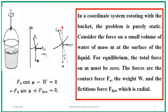F₀ makes an angle φ with the vertical. The component of F₀ along the vertical is F₀ cos φ, and the weight acting vertically downward is W. Since net acceleration is zero at equilibrium, the net force along the z-direction is zero, so F₀ cos φ − W = 0. Resolving along the horizontal direction, F₀ sin φ acts towards the center of the bucket, while the fictitious force acts radially outward along the positive x-axis. With no net acceleration in the x-direction, the net force is also zero.